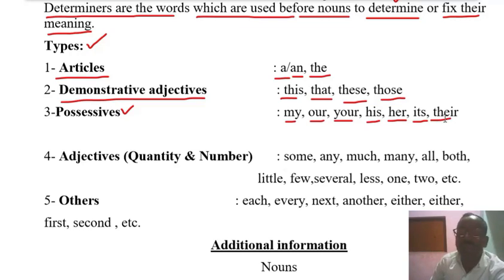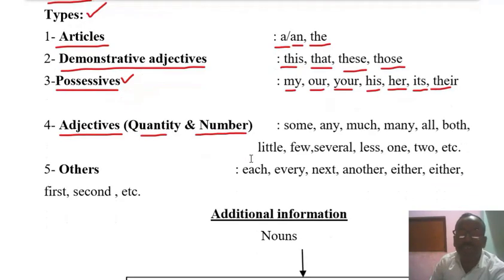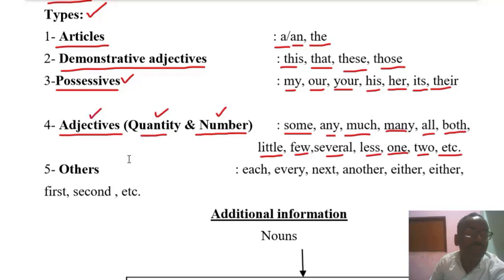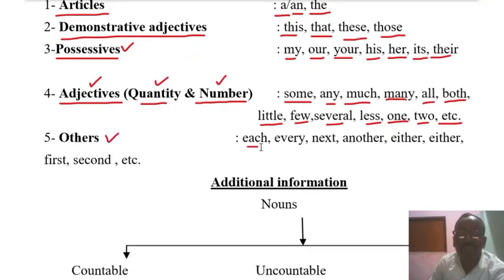Adjectives of Quantity and Number — Some, Any, Much, Many, All, Both, Little, Few, Several, Less, One, Two, etc. With the help of these words, we express quantity and number, and these words are known as Adjectives. Others include: Each, Every, Next, Another, Either, First, Second, etc.